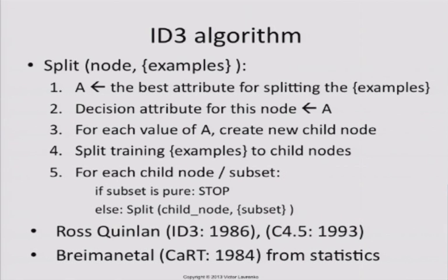You are at a particular node in this tree — this could be the root node — and you have a set of training examples that falls into this root node. The angel comes down and tells you what the best attribute is to split on, so that's going to be attribute A. We're going to create a decision node for attribute A, which has some alternatives such as sunny, rainy, or overcast. Then for each value of that attribute, we're going to create a new child node.